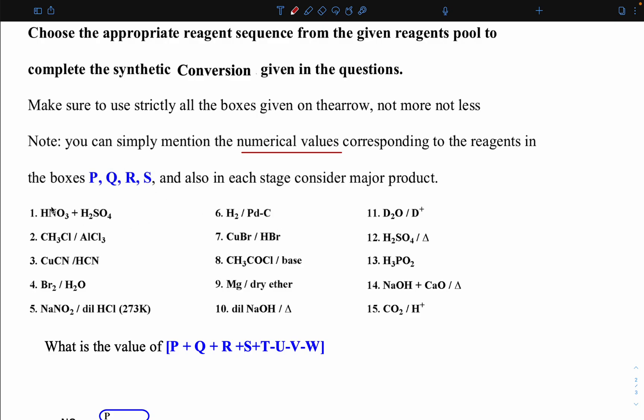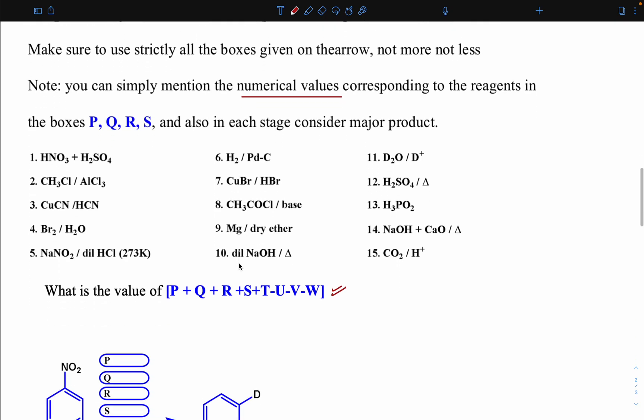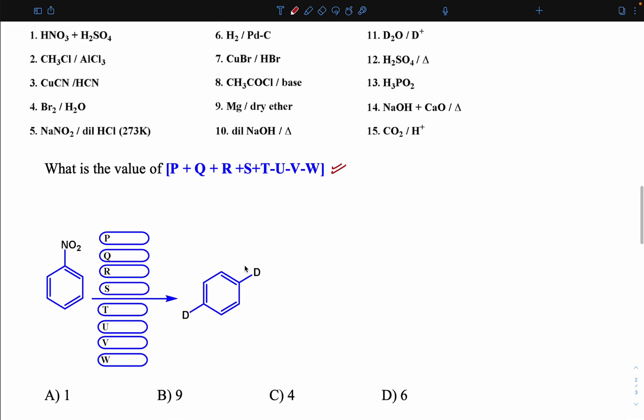Now I'm showing the question. The question is: a nitrobenzene compound is given and this time we have many reagent boxes P, Q, R, S, T, U, V, W. These all boxes we have to fill and the final product should be 1,4-di-deuterobenzene. The question is what reagents we have to use in this conversion: nitrobenzene to 1,4-di-deuterobenzene.